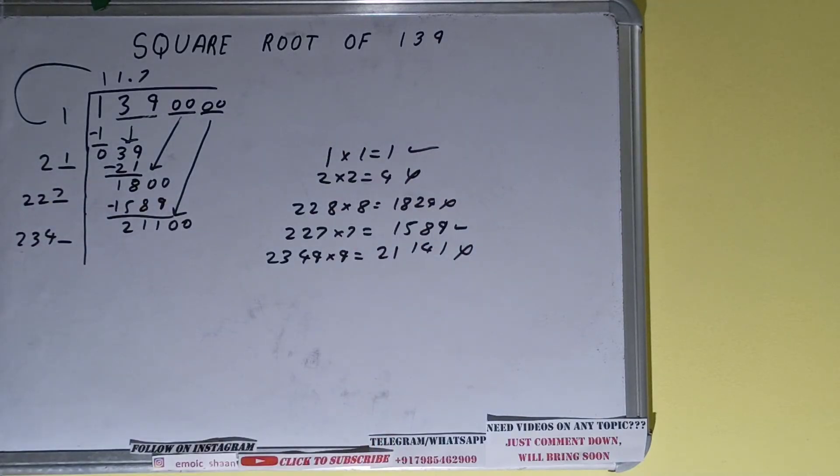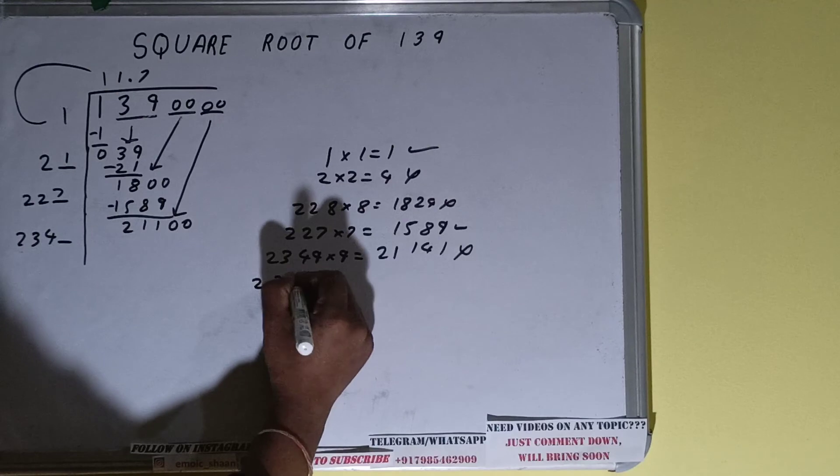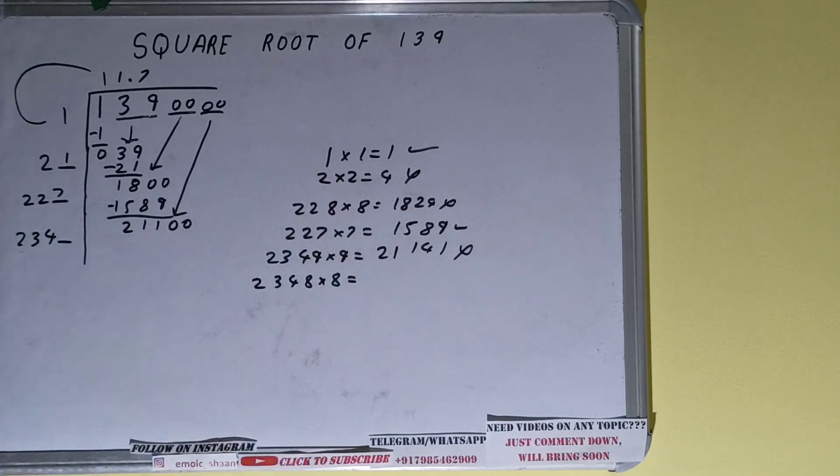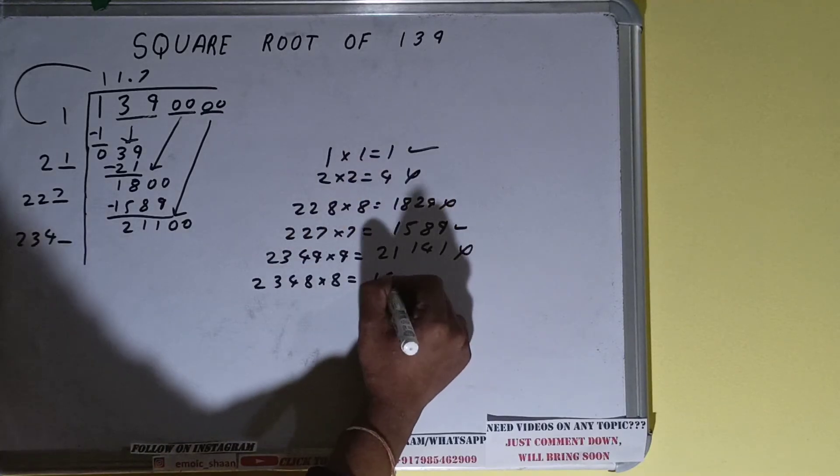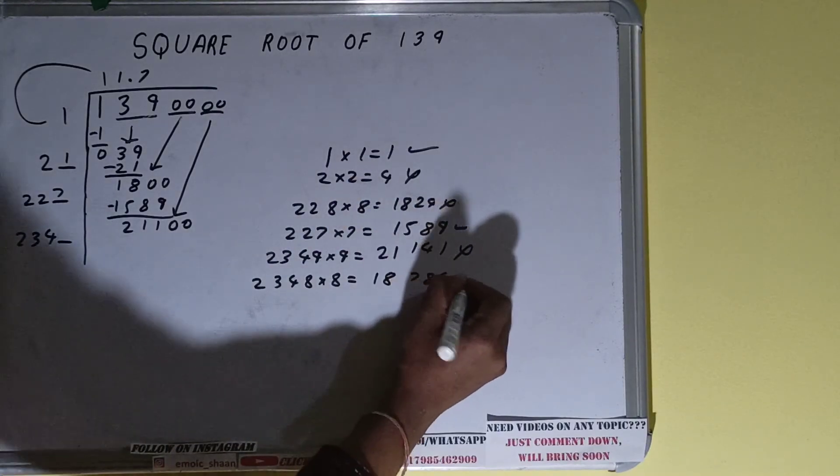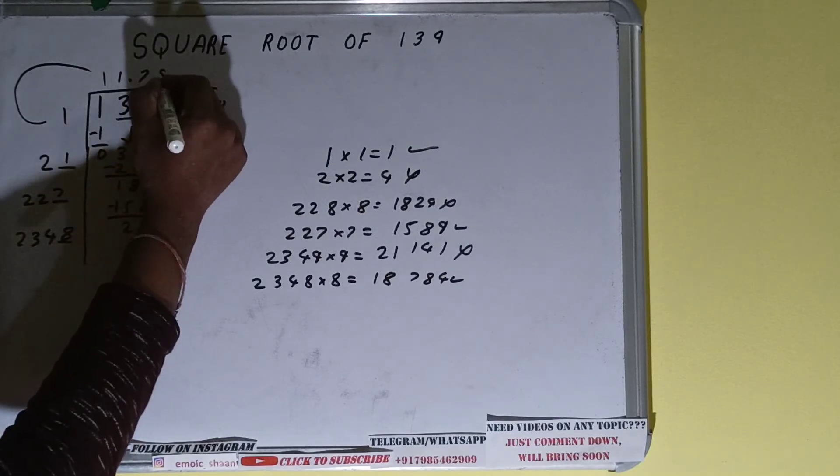So we have to go eight times. 2348 into 8 we have to go, we'll be having 18784 which is okay to take. So 8 here and 8 here, 18784, subtract it.